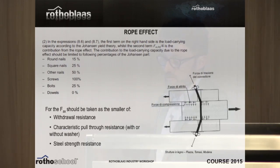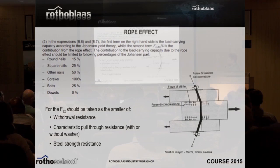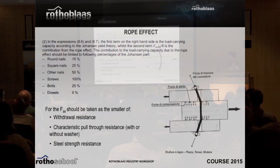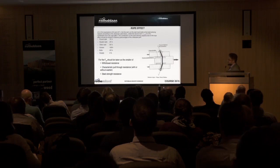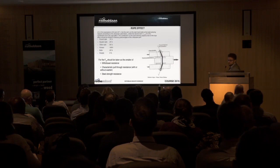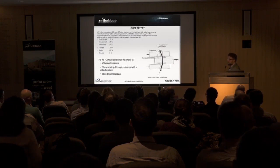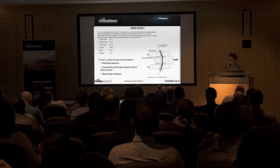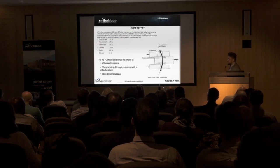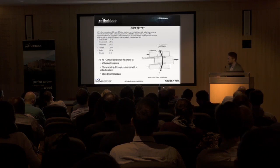This is the rope effect I was speaking about. In a typical shear connection, the bolt tries to keep the two elements together, creating an additional effect of keeping them compressed. Eurocode 5 says this effect can be fully credited for screws — 100% taken into account. It means screws can have a much higher shear resistance thanks to the thread. In contrast, smooth dowels have zero rope effect because the smooth surface does not keep the two elements together.